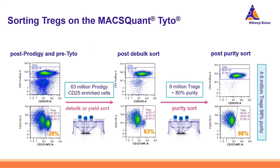Let's have a look at some data. Starting from the Prodigy enrichment, we end up with 38% of T-regs, then we go into a two-step sorting. First a bulk sorting is done achieving 83% pure T-regs, and then a purity sort brings us to 98% pure T-regs.